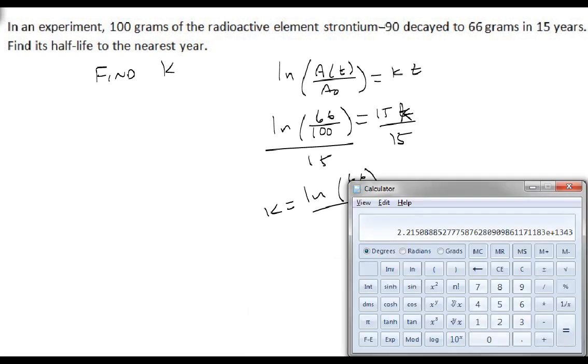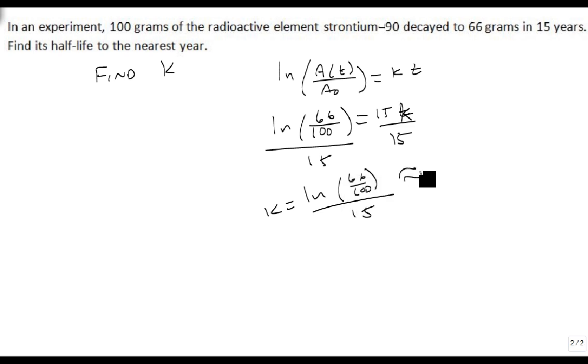And here's an exact answer, that's where I'd stop if I didn't have a calculator. But I do have a calculator, so I'm going to do 66 over 100, take the natural log of that, and divide that by 15. And notice this is negative, it's decreasing. I'm going to store that in memory so I can come back to it later, but this is approximately equal to minus 0.027701.